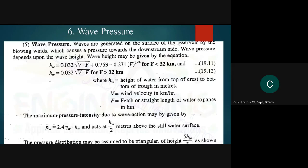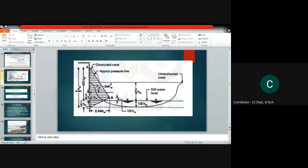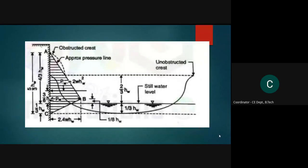The next force is wave pressure. Waves are generated on the surface of the reservoir by blowing winds, causing a pressure toward the downstream side. This is an extra pressure in addition to the hydrostatic pressure from the stored water. Consider the wave height HW.